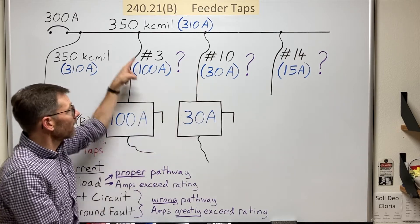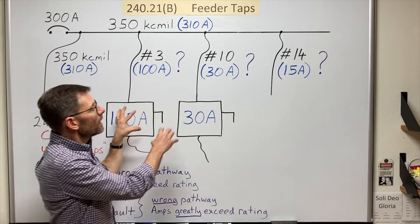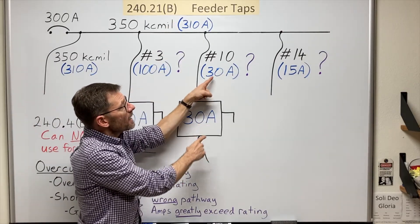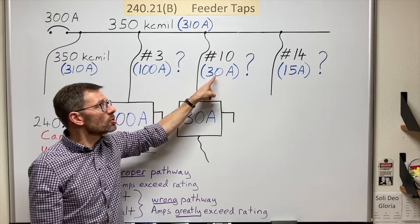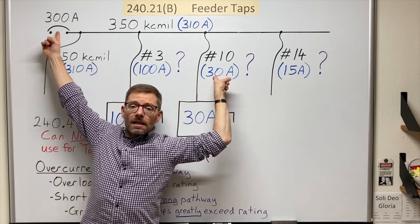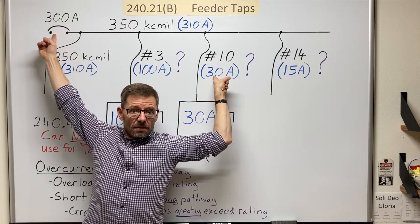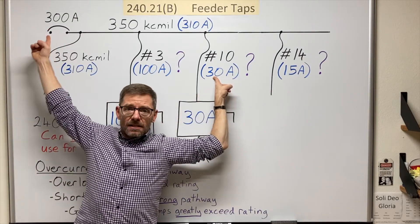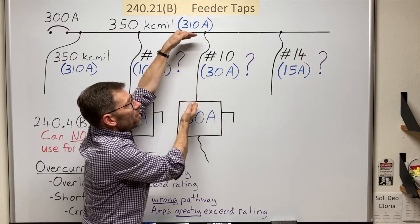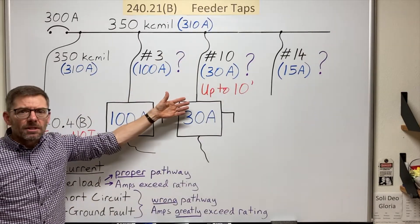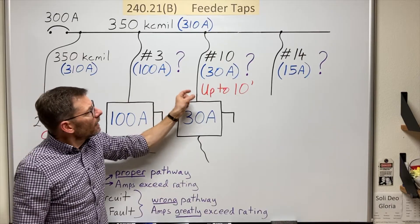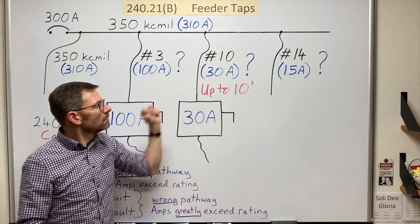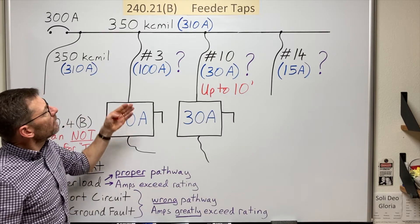Now, it's here where we have the difference. B1 says I can actually go as low as one tenth of the ampacity of the breaker ahead of it. One tenth of that ampacity up to ten feet. The other requirements in there are that this conductor needs to be in a raceway.